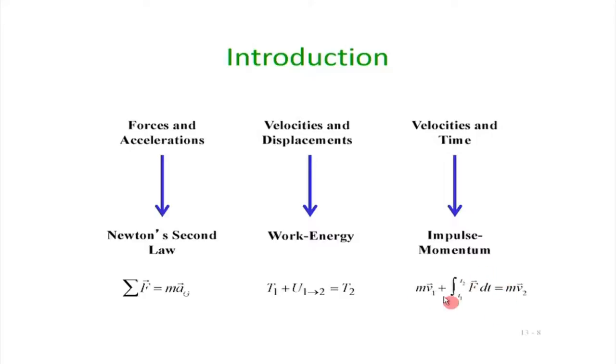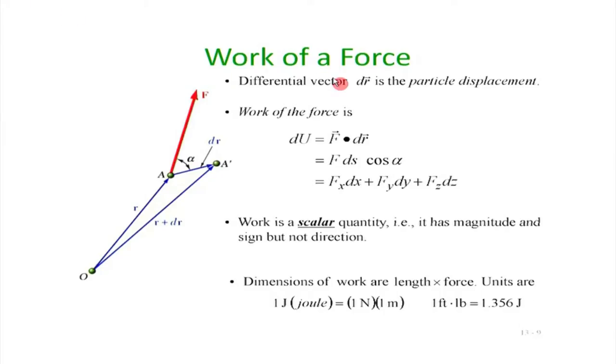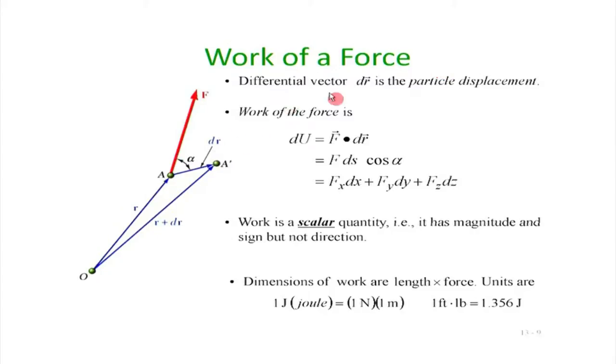We will discuss the impulse-momentum theorem, where the momentum can be modified by acting an impulse on it. This is the initial momentum; when we act an impulse on it, the momentum of the body changes. We have discussed the concept of work in great detail when discussing the principle of virtual work and the principle of minimum potential energy.